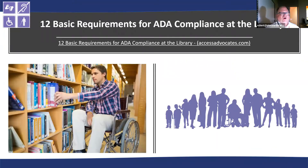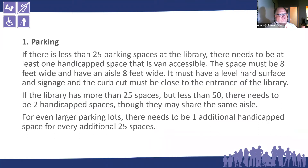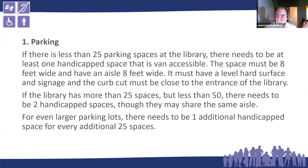The 12 basic requirements for ADA compliance at your library — pulled from accessadvocates.com — are things every library needs to be aware of. Number one is parking. If there are fewer than 25 parking spaces, there needs to be one handicapped space that is van accessible — eight feet wide with an eight-foot aisle. It needs to be level, have signage, and the curb cut should be right near the entrance. If the library has more than 25 but fewer than 50 spaces, it needs another handicapped space, though they can share the same aisle. For larger lots, one additional handicapped space for every 25.